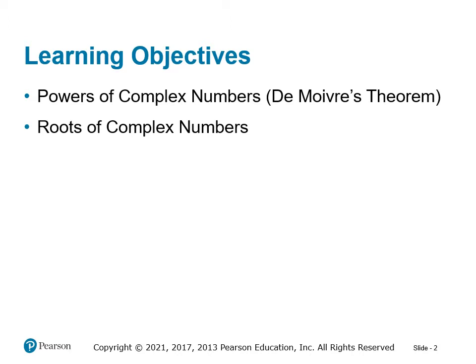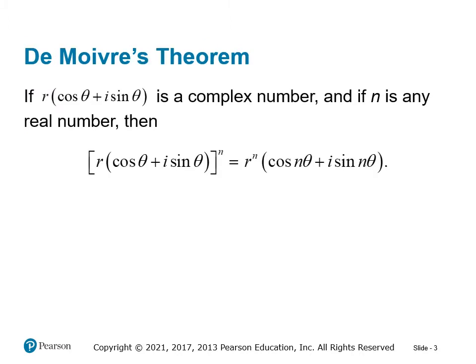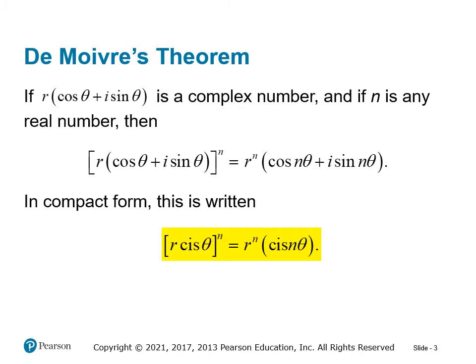Specifically, we're going to figure out how to find powers of complex numbers using polar form and then also roots of complex numbers, much like the root of a quadratic equation. De Moivre's theorem says if r CIS theta is a complex number and n is any real number, then raising that complex number to the power of n gives r^n CIS(n·theta) — that is, r^n times cosine(n·theta) plus i sine(n·theta). So raising a complex number to a power is the same as raising the magnitude to that same power and CIS(n·theta).